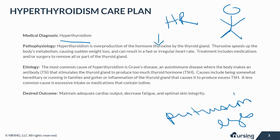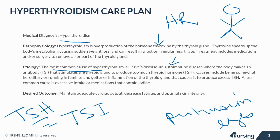The most common cause of hyperthyroidism is Graves' disease, which is an autoimmune disease where the body makes an antibody, TSI, that stimulates the thyroid gland to produce too much thyroid hormone or TSH. Causes include being somewhat hereditary or running in families, but also a goiter or inflammation of the thyroid gland that causes it to produce excess TSH. A less common cause is excessive intake of medications that contain iodine.